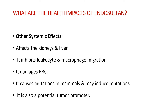Endosulfone affects the kidneys and liver. It inhibits glucosidase and macrophage migration, and it damages red blood cells. It causes mutations in mammals and may induce further mutations. It is also a potential tumor promoter.